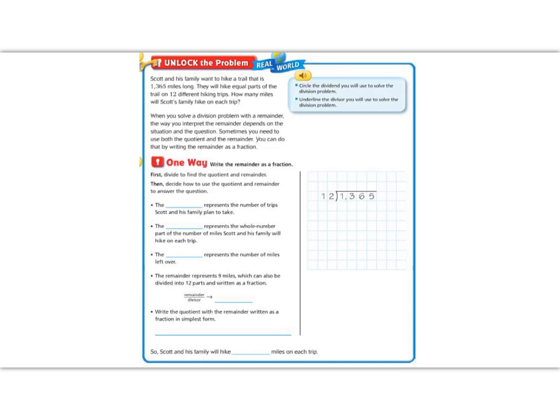Today's unlock the problem says Scott and his family want to hike a trail that is 1365 miles long. They will hike equal parts of the trail on 12 different hiking trips. How many miles will Scott's family hike on each trip? When you solve a division problem with a remainder, the way you interpret the remainder depends on the situation and the question. Sometimes you need to use both the quotient and the remainder. You can do that by writing the remainder as a fraction.